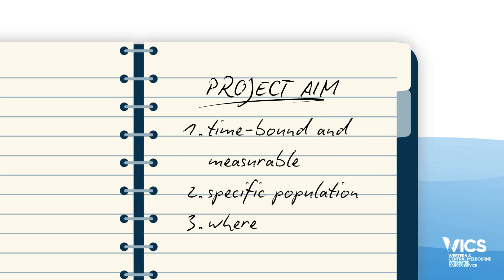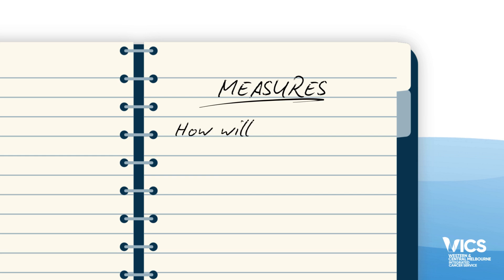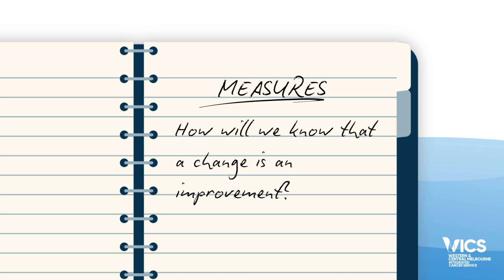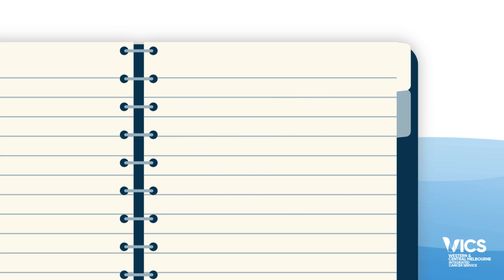State the aim clearly and concisely, and include numerical goals when possible. Question two: how will we know that a change is an improvement? Measurement is a critical part of knowing if we have made a difference, what the impact of the changes are, if we have met our aim, and what future action to take. Consider how you will measure the impact or success of your improvement change.